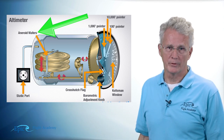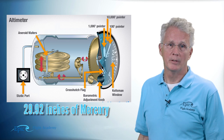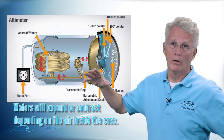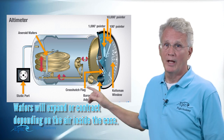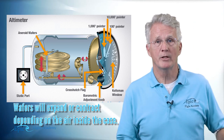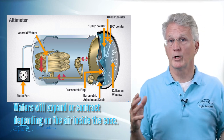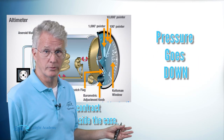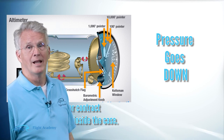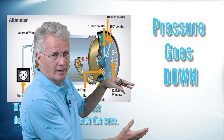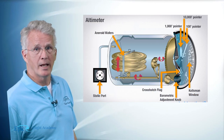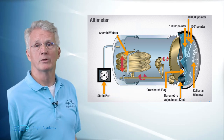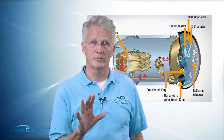Take a careful look at this cutaway and notice there are three disks here, or we call these wafers. These aneroid wafers are pressurized at 29.92 inches of mercury. These aneroid wafers are going to expand or contract depending upon the air inside the case. Imagine your aircraft goes up in altitude — the air pressure lowers, so the pressure inside the case lowers because of that static air connection. That allows the wafers to expand.